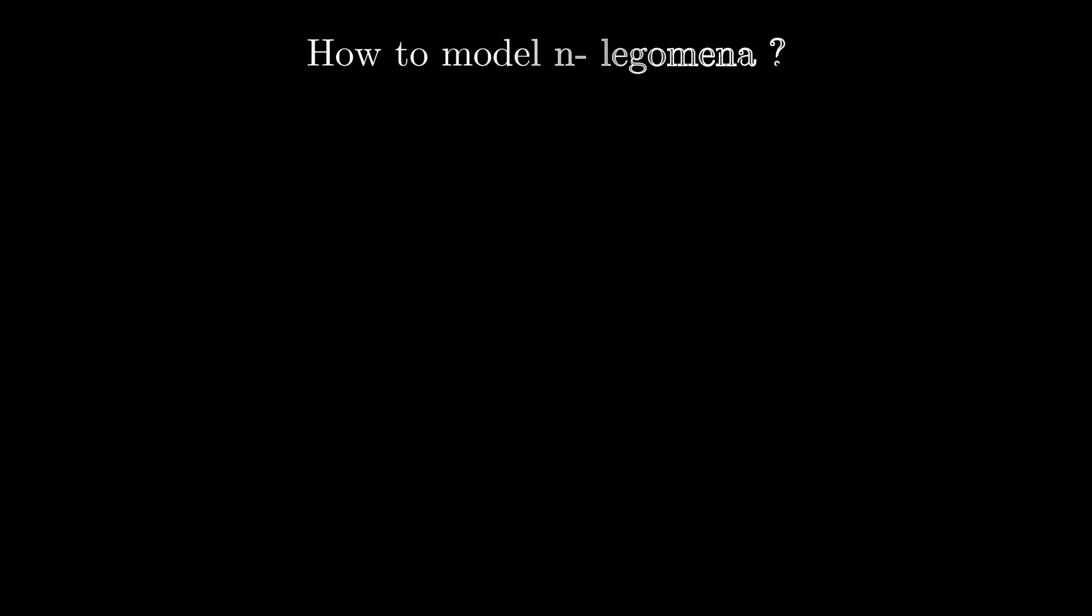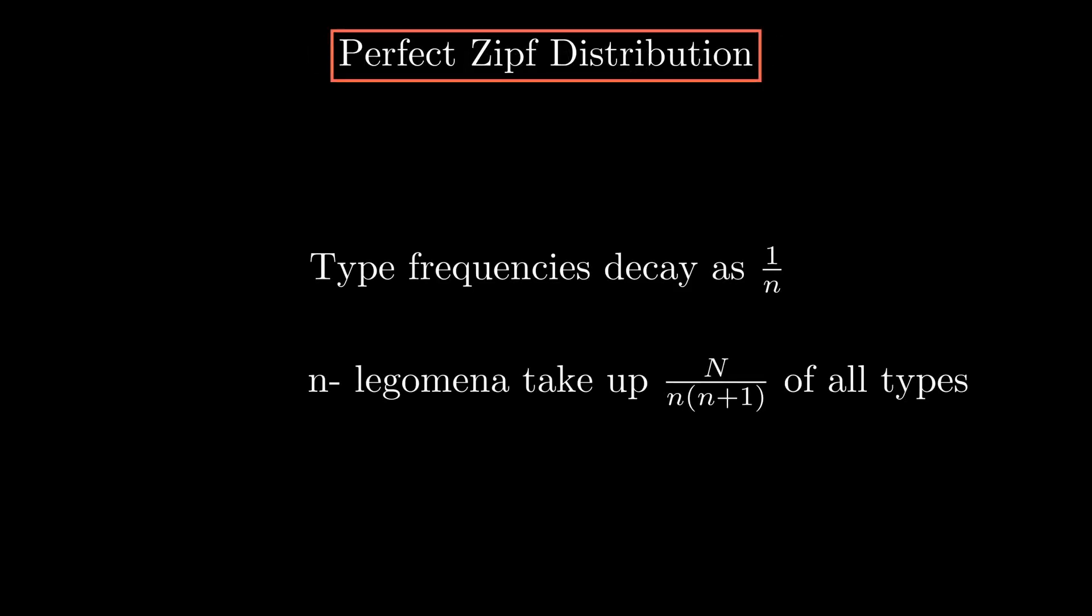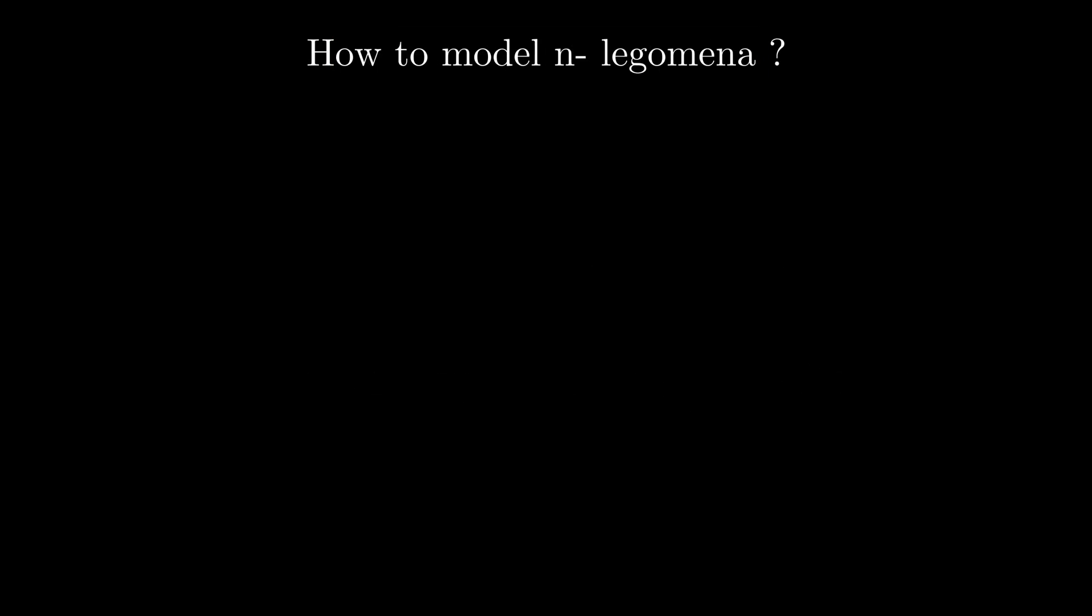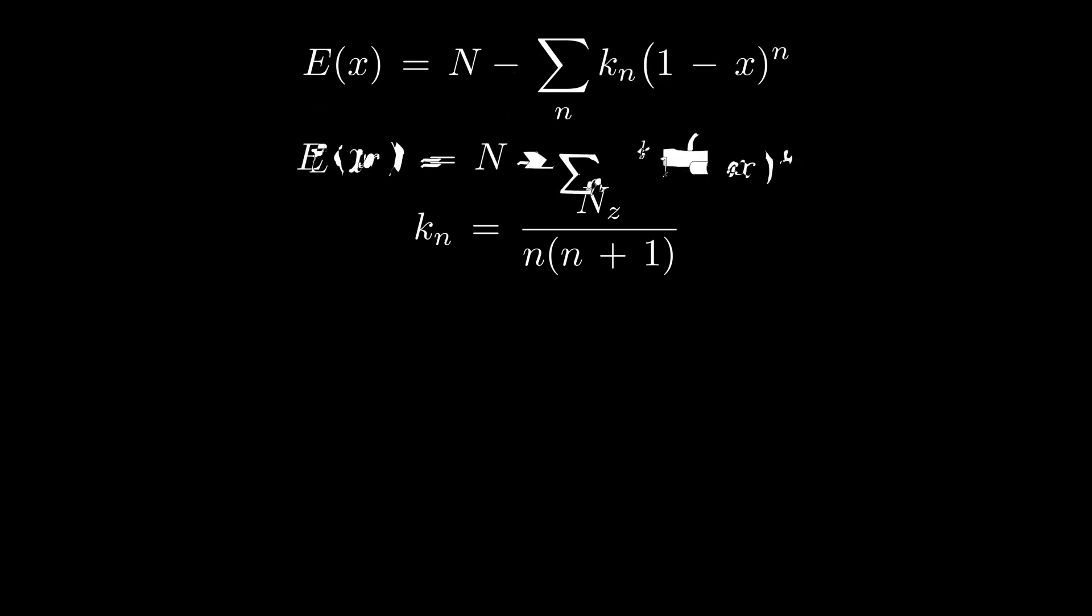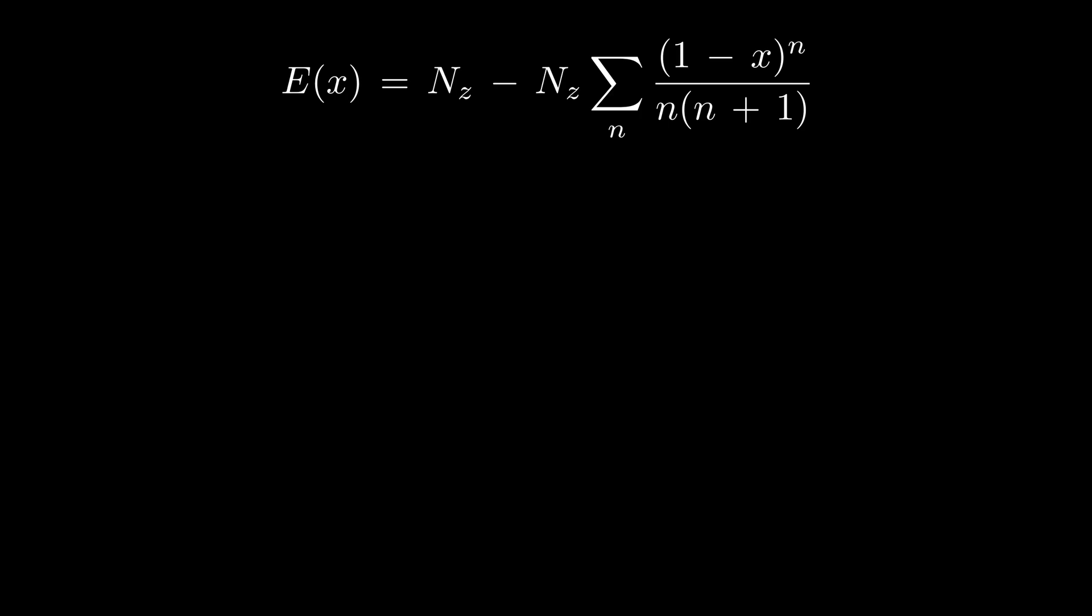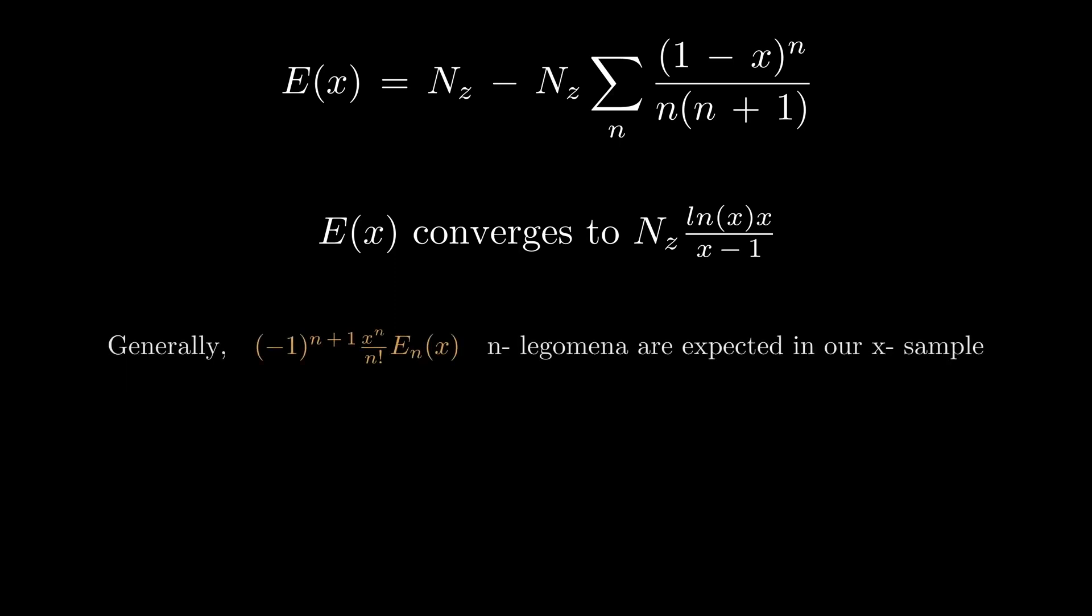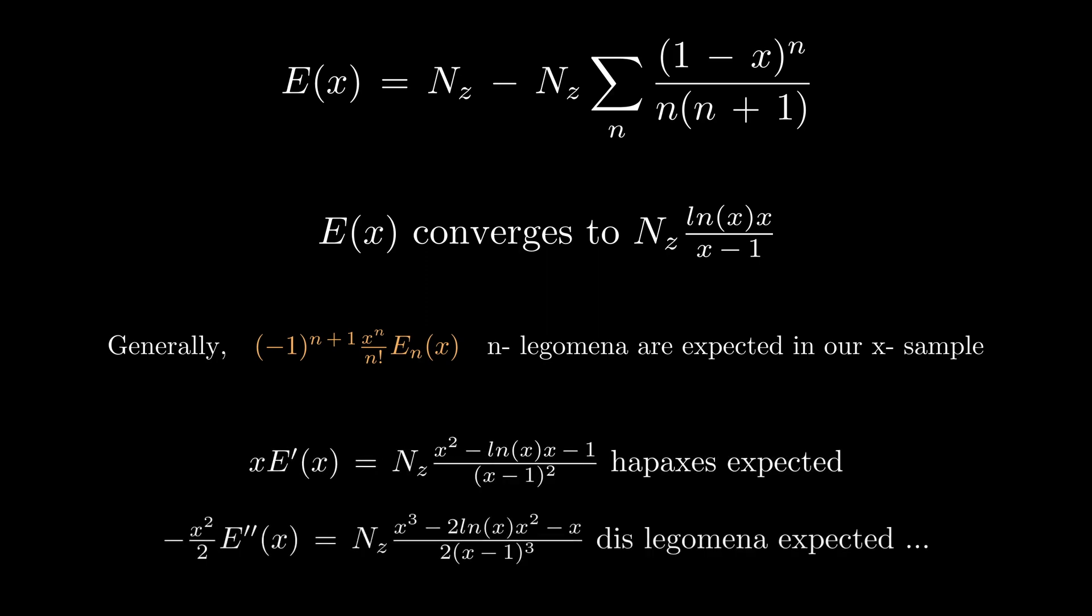As for our definition of a perfect Zipf distribution, we model the expected number of types as this. Plugging this into our general formula gets us a new expression, which now only depends on x, the proportion of sampled text. Using calculus again, we can show that it converges to a neat function, and now we recall our relationship between E of x and expected number of n-legomena, that finally give us all the answers.